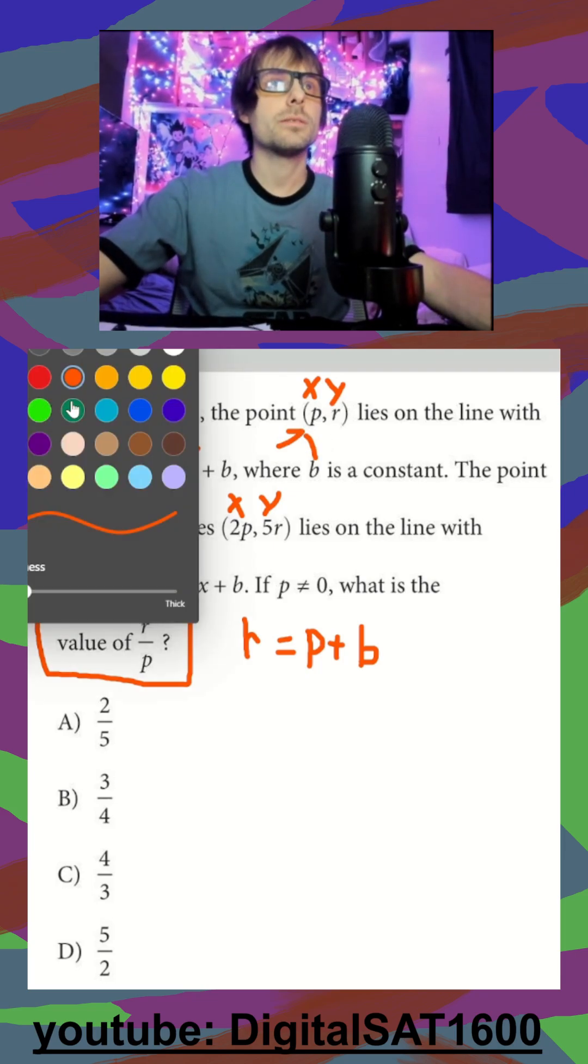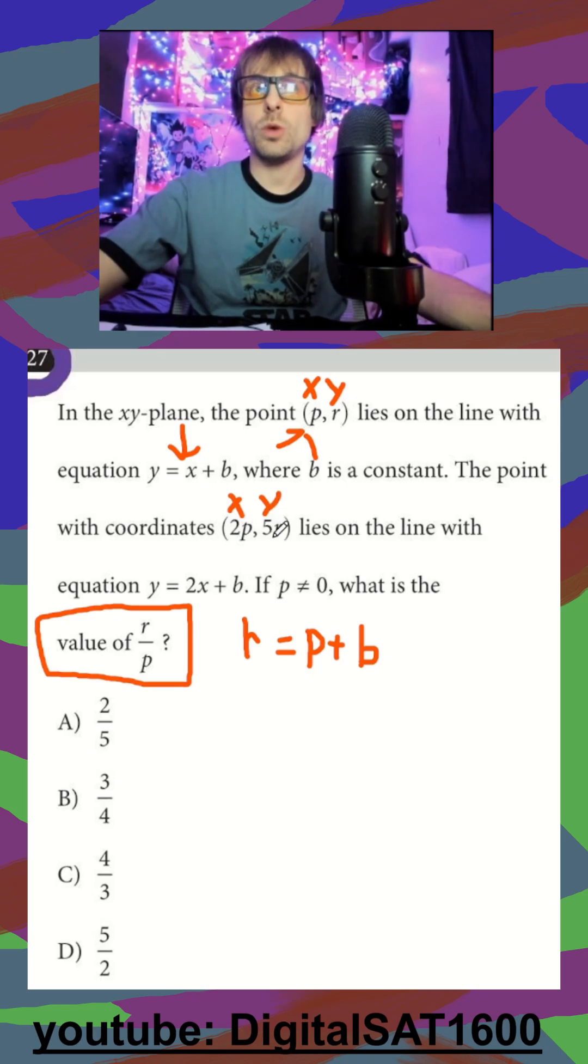For my second equation, I see this x and y, which I can plug into this x and y. So I can say 5r is equal to, this is going to be 2 times x, so 2 times 2p, so 4p plus b.